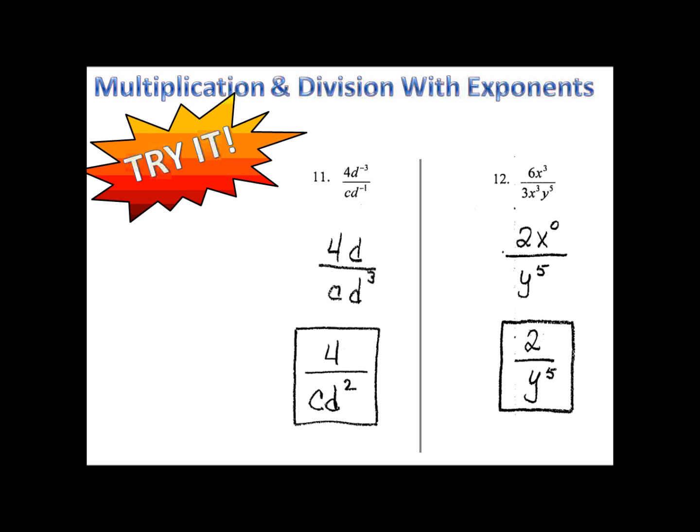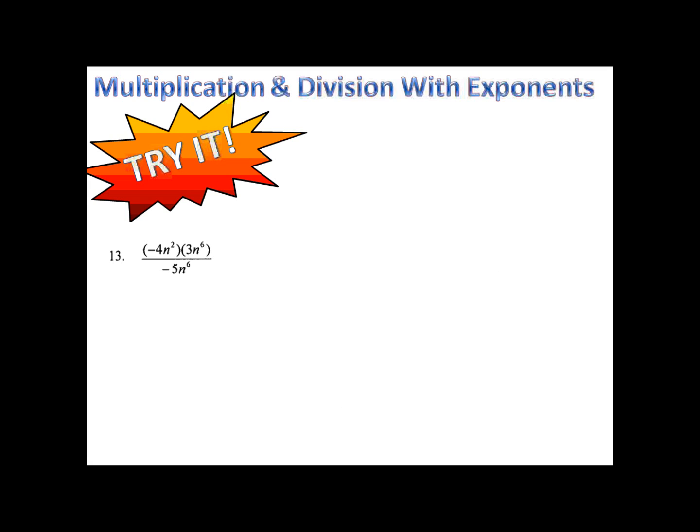Example 13 is another fun one. We're going to go ahead and multiply first, take care of the numerator, and we'll do the division last. Please pause here and let's give it a try. In the top, we have negative 4 times 3, which is negative 12, n to the second and n to the sixth, which is n to the eighth. We have on the bottom negative 5, n to the sixth. Now, 12 and 5 do not simplify, although they're both negative, so my answer will become positive.